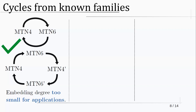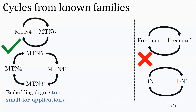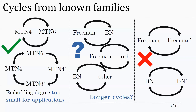On the other side, there were some results already known about what we cannot do. It is known, for example, that Freeman cycles do not exist — a Freeman curve cannot form a cycle with another Freeman curve — and the same for BN curves. But there were still many unknowns: what about a Freeman and a BN curve? What about a Freeman curve and another curve not known to belong to one of these families? What about longer cycles with more than two curves?